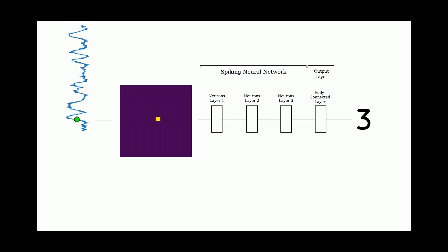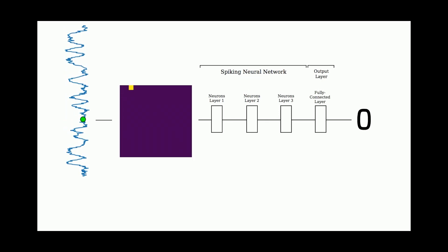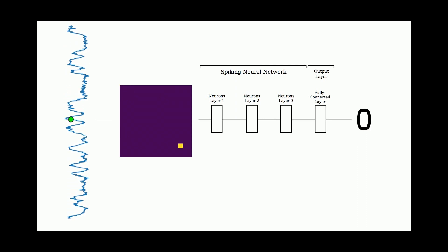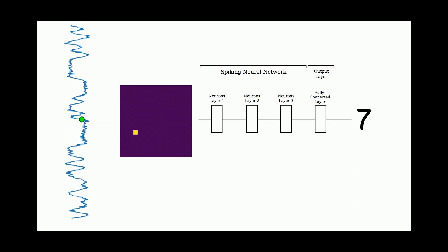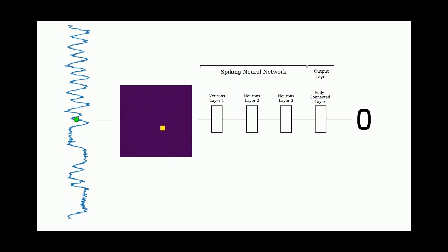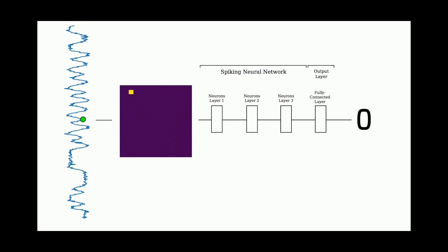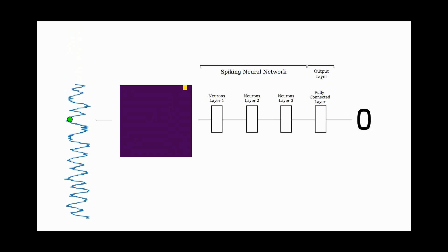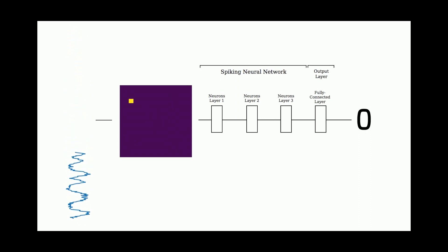Here you can see a high-level overview of what the spiking neural network does. On the left is our incoming radio signal, and it's processed one data point at a time by the spiking neural network. At each time step, we turn the input IQ data into an image, give it to the network, and the network predicts a class label which is the number that you see to the right. Then, after it's gone through the whole signal, it chooses the modulation class that it predicted most often.